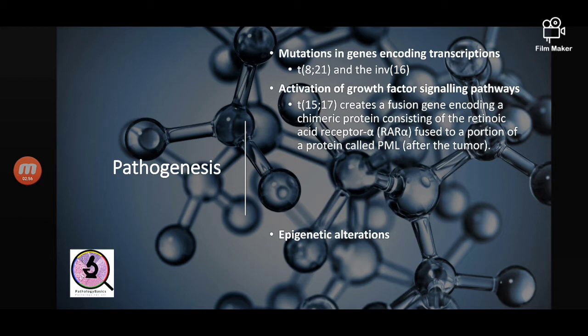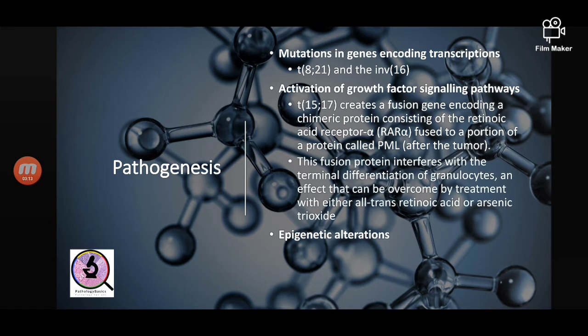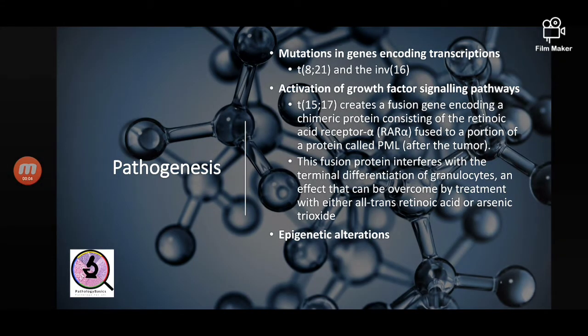What happens due to t(15;17) is that a fusion gene is created that encodes a chimeric protein consisting of the retinoic acid receptor RAR-alpha — this fusion protein is called PML. This fusion protein interferes with the terminal differentiation of granulocytes, and this effect is overcome by treatment with all-trans retinoic acid (ATRA) or arsenic trioxide. Treatment with ATRA in PML or acute promyelocytic leukemia has revolutionized treatment — earlier patients used to die from complications such as DIC (disseminated intravascular coagulation). Giving all-trans retinoic acid, a lot of patients now recover.